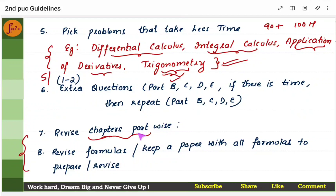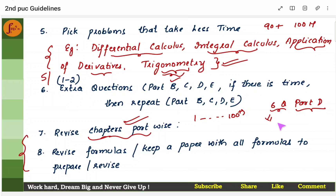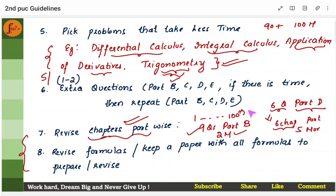Revise all chapters part-wise, not from page 1 to page 100 continuously. If you're attempting 6 questions in part D, ensure you're prepared for those 6 chapters — all 5-markers in those chapters. For 9 questions in part B, choose all 2-markers from those 9 chapters and practise. Don't read it like a book — there's not enough time. Also revise formulas: if possible, write all formulas on one page and revise them before the exam. I have prepared some short formula-only videos for a few chapters.